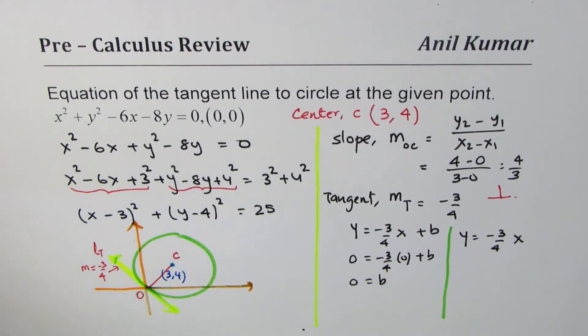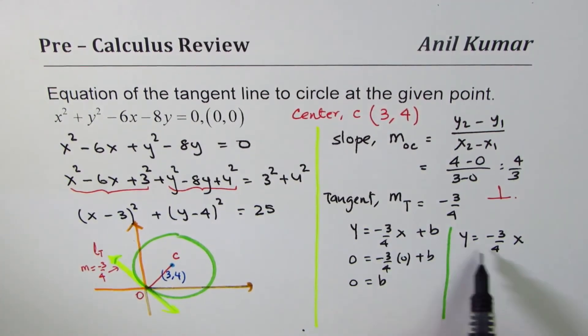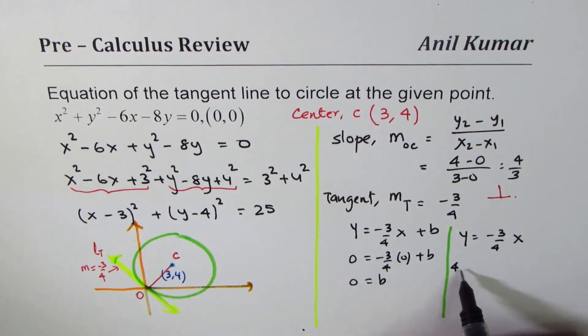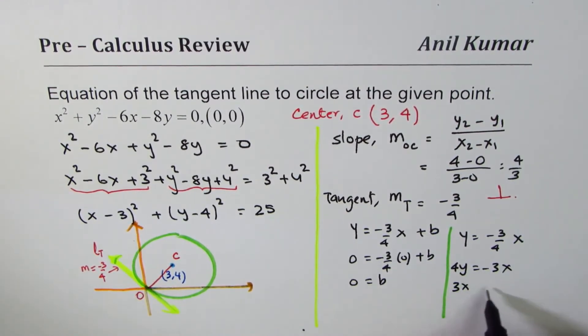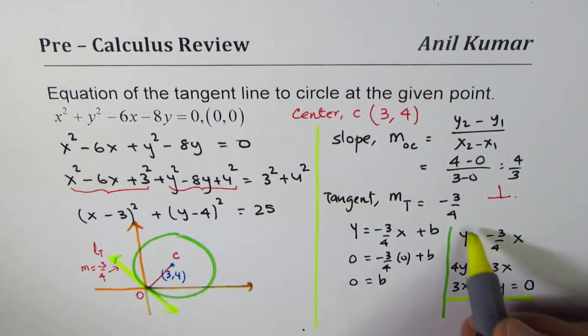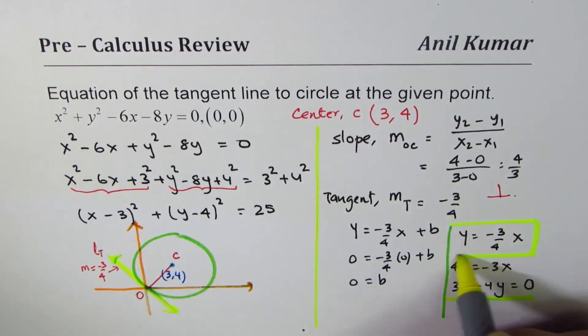That becomes the equation of the line in slope-intercept form. You may write it in standard form also. Let me multiply by 4: we get 4y = -3x or 3x + 4y = 0. So that becomes the equation in standard form. It's kind of important to review all this and therefore I'm writing my answer in both the forms.